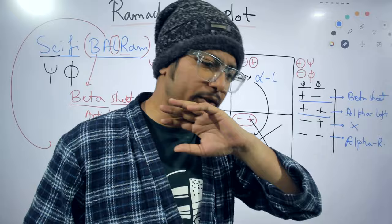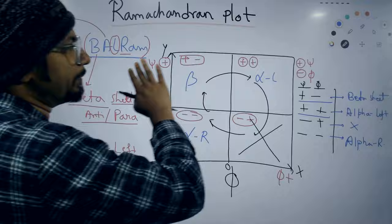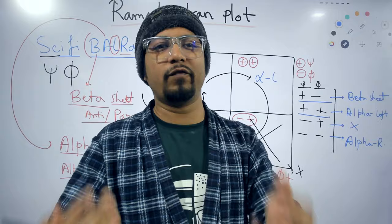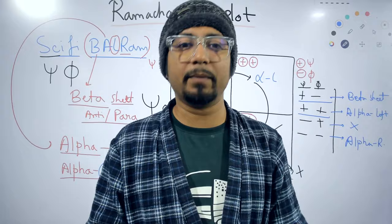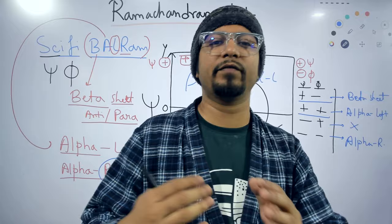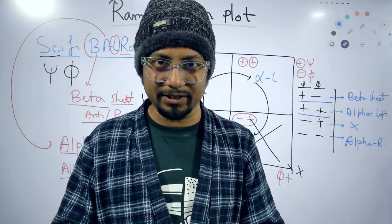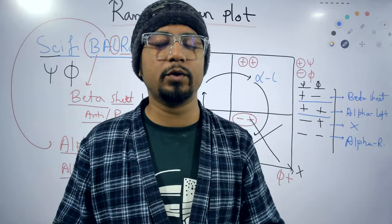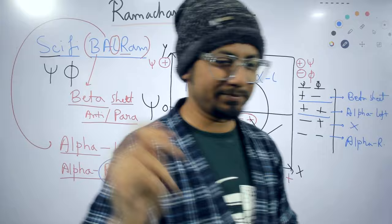You don't need to read and mug up anything — just remember psi-phi balraam. You will be able to draw the plot, and whatever question is asked in the examination, you can easily solve it. That's how easy it is to remember the Ramachandran plot — that's the mnemonic for Ramachandran plot for CSI Net biochemistry, Unit 1. If you want to know about Ramachandran plot in detail, there are videos in my channel you can watch. If you like this video, please hit the like button, share it with your friends, and subscribe. There's a separate playlist of all mnemonic videos — I'll put the link in the description. Thank you, bye.